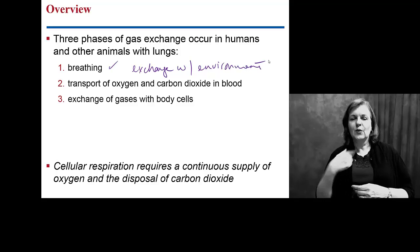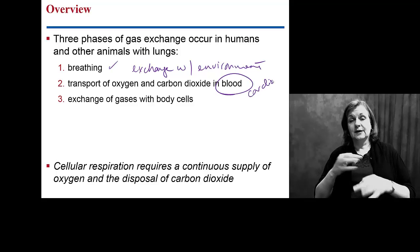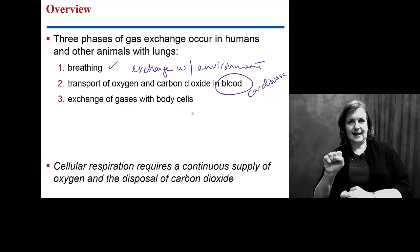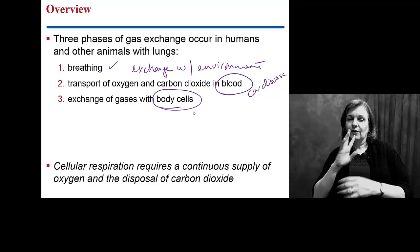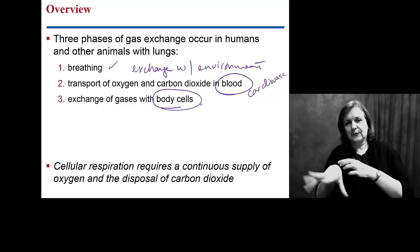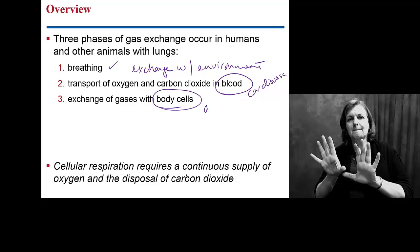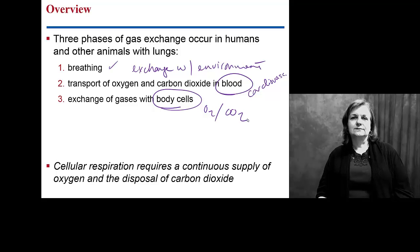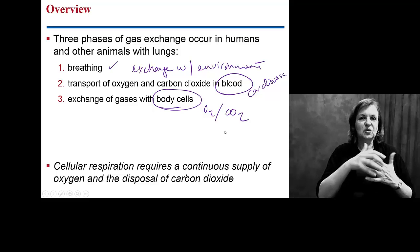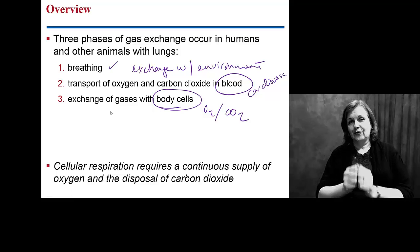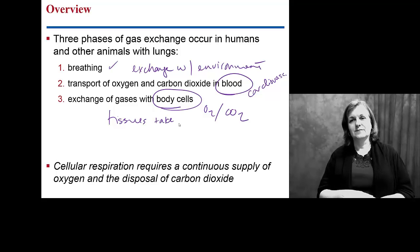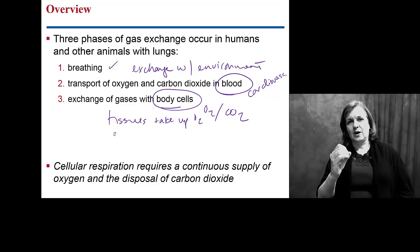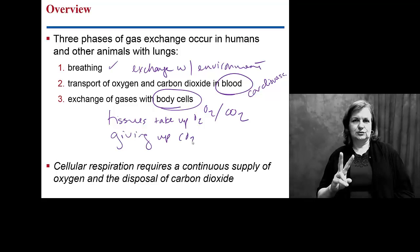Then we look at moving gases around the body with blood — we'll talk about that in the cardiovascular system later. And then we actually look at an exchange of gases at the body cell level. This is not at the environment; this is at each individual cell exchanging oxygen and carbon dioxide. When we look at exchange at the body cells, we're really thinking about the tissues taking up oxygen and giving up CO2 as waste.